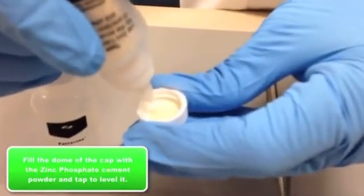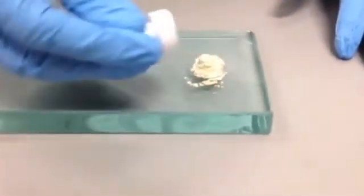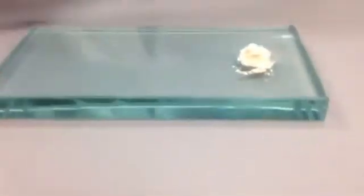So the first step is to fill the cap up to the dome line with powder and she's just tapping down to level it out. And then as soon as you get that, you pour it onto the glass slab that's been chilled.